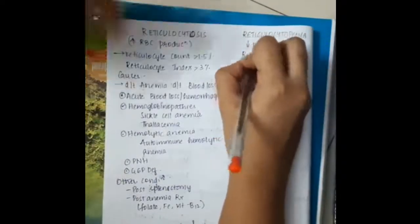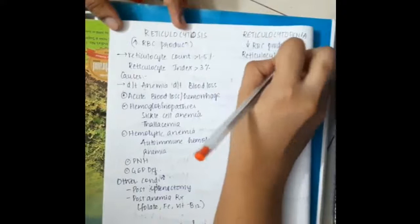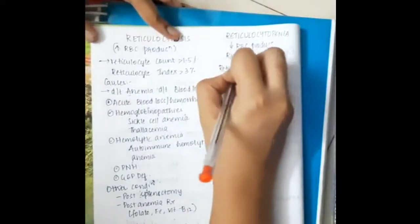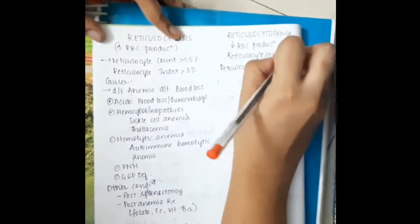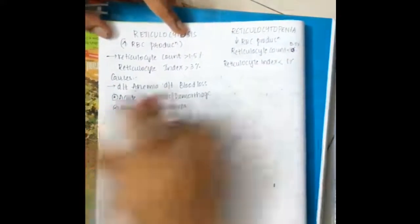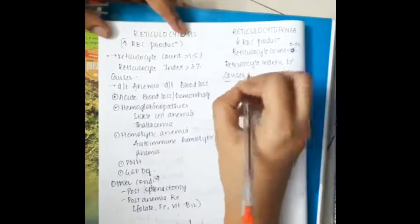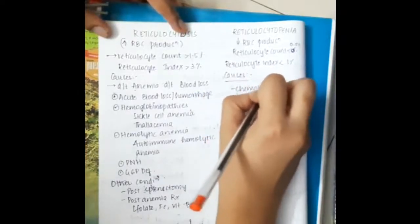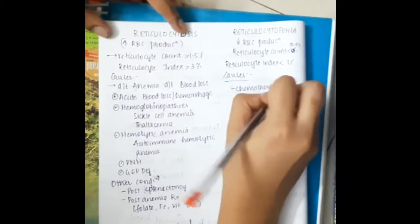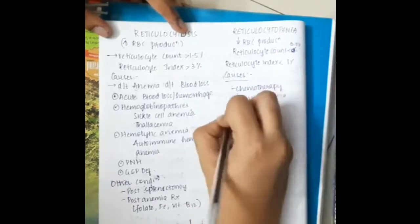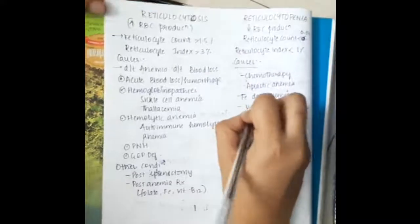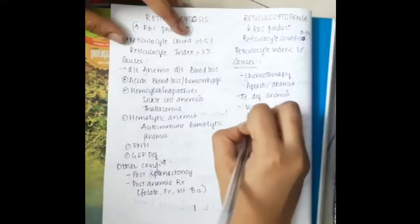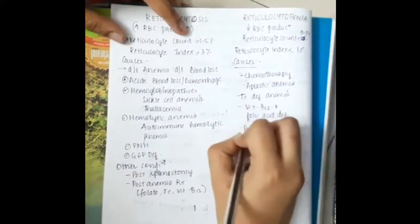Then we have reticulocytopenia, which is decreased RBC production. Reticulocyte count should be less than 0.5 percent and reticulocyte index should be less than 1 percent. The causes of reticulocytopenia include chemotherapy, aplastic anemia, and iron deficiency anemia.